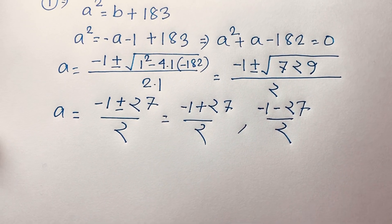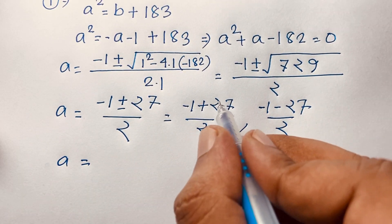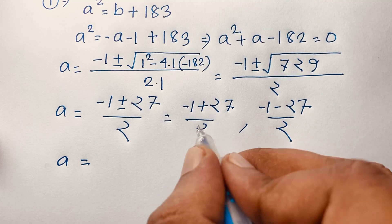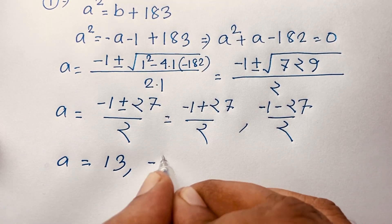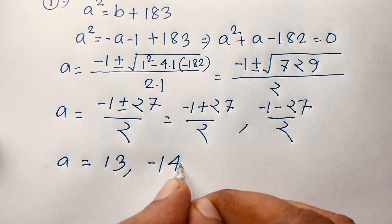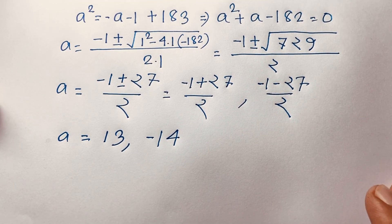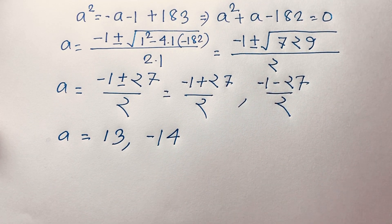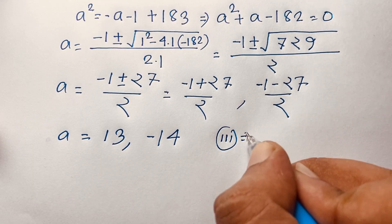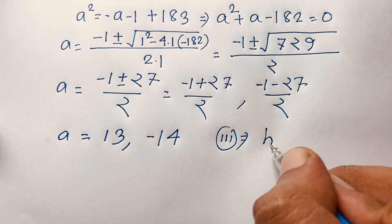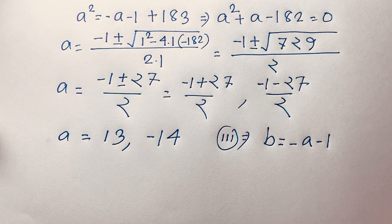So a equals minus 1 plus 27 over 2, which gives 26 over 2 equals 13, and a equals minus 1 minus 27 over 2, which gives minus 28 over 2 equals minus 14. Recalling our third equation b equals minus a minus 1.